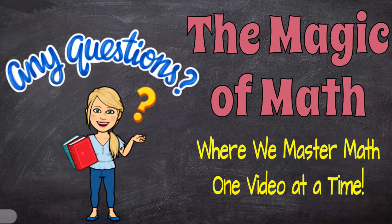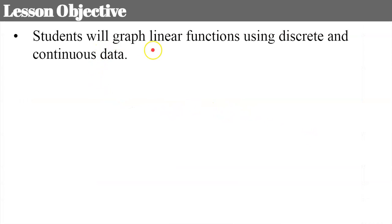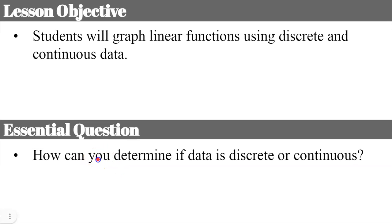Welcome to the Magic of Math, where we master math one video at a time. Today, our lesson is on representing linear functions with graphs. We're going to talk about discrete domains and continuous domains. The objective today is that you will graph linear functions using discrete and continuous data. The question I want you thinking about today as I go through the lesson is how can you determine if a data set is discrete or continuous? So that's what I want you able to answer by the end of this lesson.